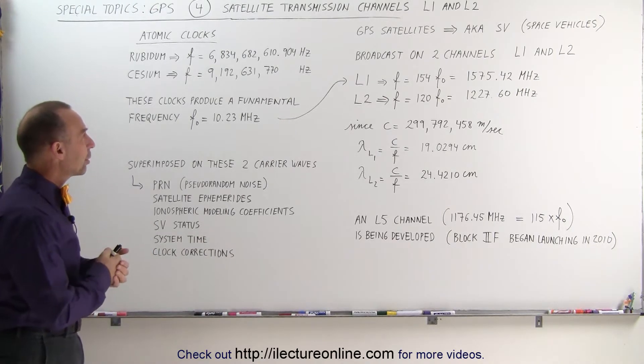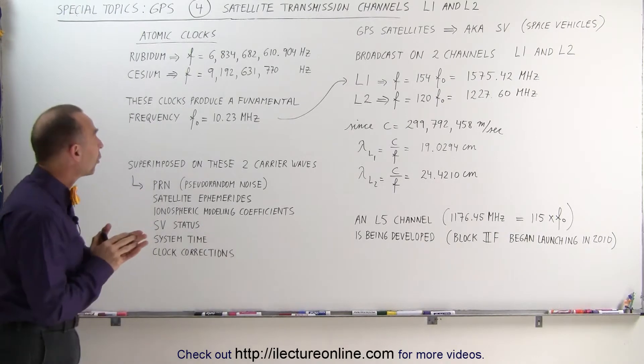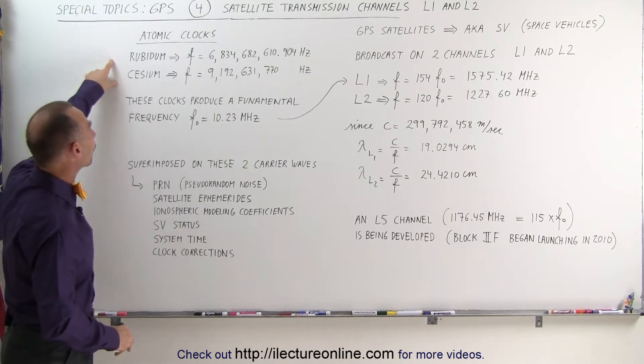They carry what we call the carrier frequencies. Where do they come from? Well, it turns out that each satellite has a total of four atomic clocks.